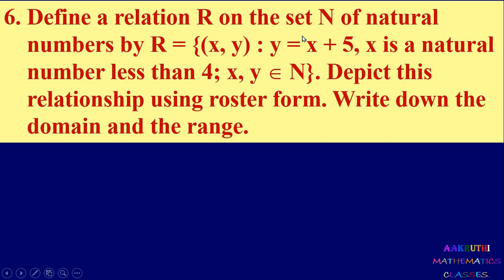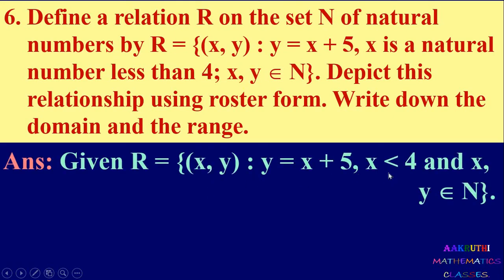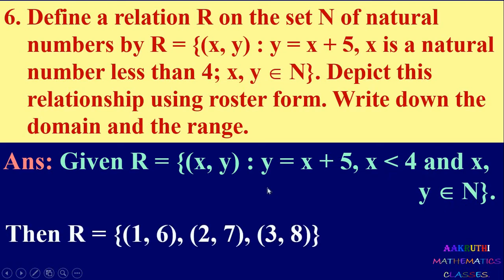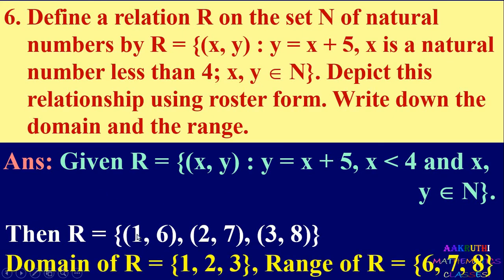Next problem: define a relation R on the set N of natural numbers by R = {(x, y) : y = x + 5, where x is a natural number less than 4, and x, y ∈ N}. When x=1, y=6; x=2, y=7; x=3, y=8. So R = {(1,6), (2,7), (3,8)}. Domain of R = {1, 2, 3}. Range of R = {6, 7, 8}.